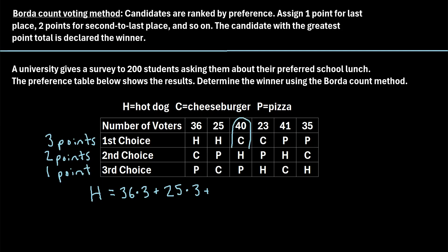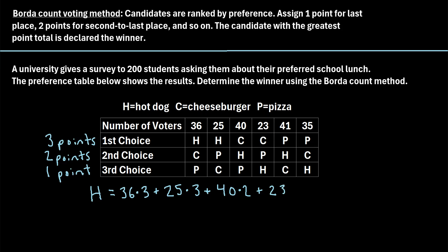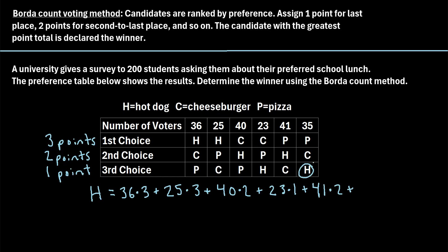In the next column, hot dog got second choice for 40 students, so that's 40 × 2 points. In the following column, 23 students chose hot dog third, giving 23 × 1 point. Then 41 students chose hot dog second, adding 41 × 2, and in the last column hot dog was chosen last by 35 students, giving 35 × 1. Multiplying all of these out gives hot dog a total of 403 points.